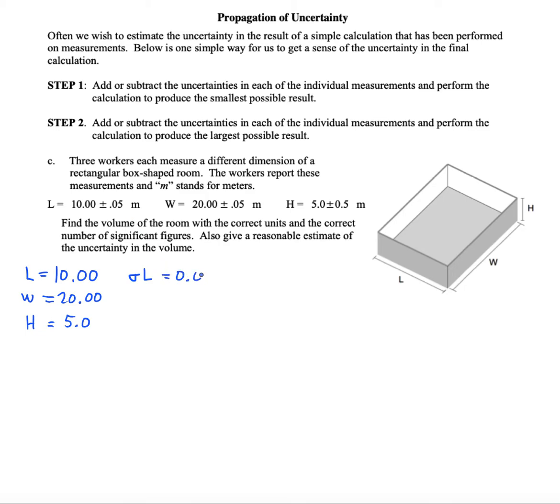And that is 0.05 meters. Sigma W will be 0.05 as well, and we see that the height was measured less precisely. The uncertainty is 10 times greater, 0.5.